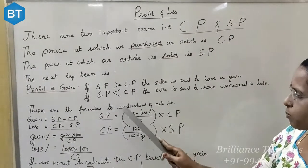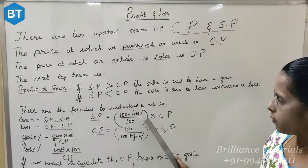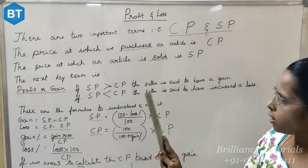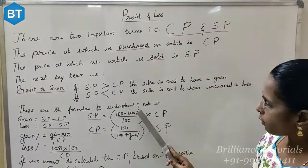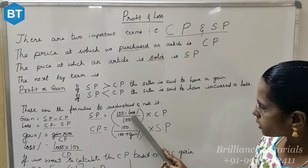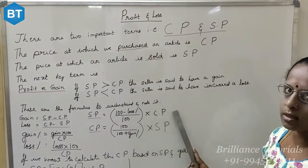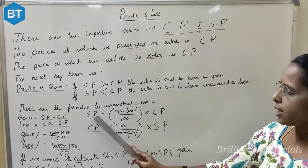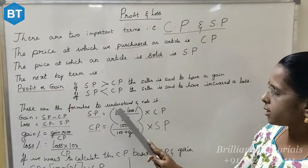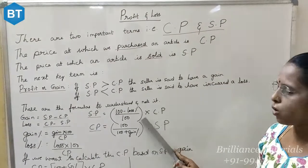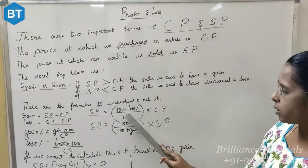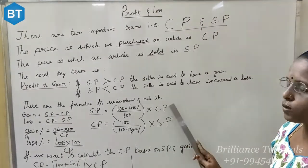First, understand what the problem has given and write the correct formula. When they have given the loss percentage and the CP, selling price is equal to 100 minus loss percent, divided by 100, into CP.